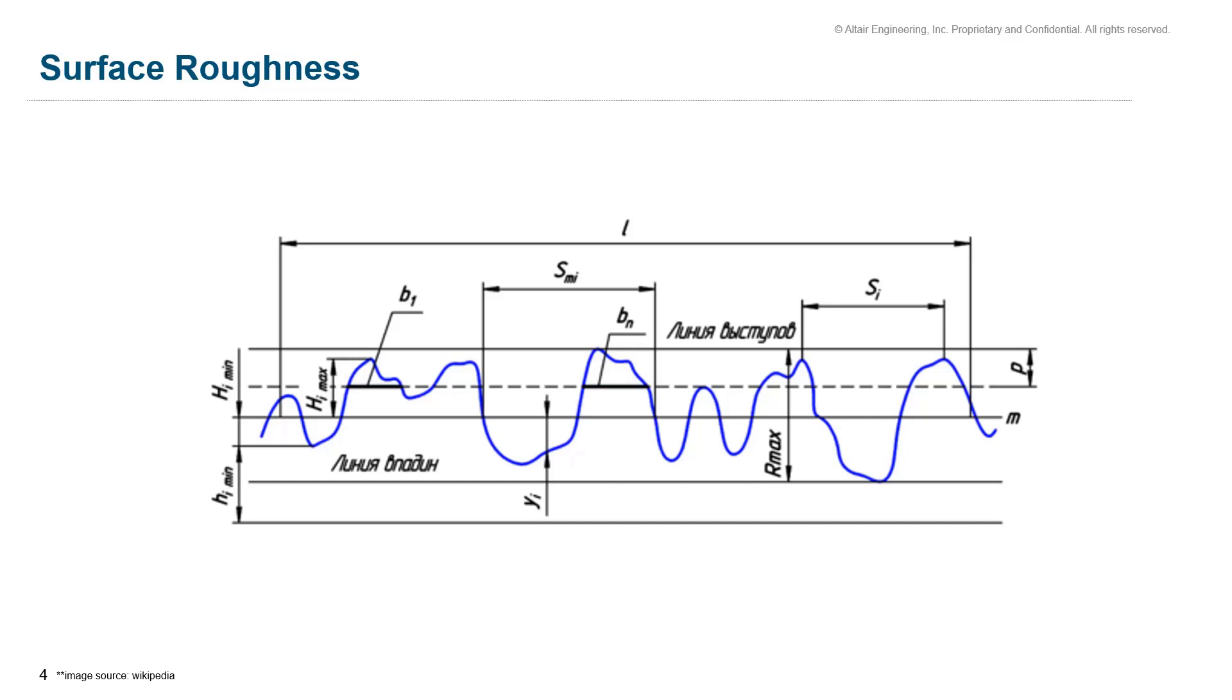In simple terms, the peaks and the valleys of a surface profile shown in the image represent the magnitude of the roughness of a given surface. There are many studies that indicate that surface roughness increases the signal loss and dispersion due to the reduced conductivity.